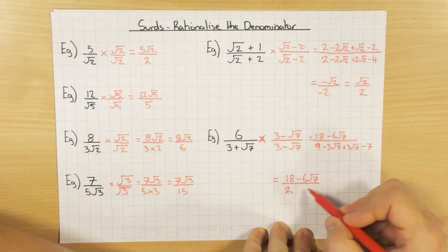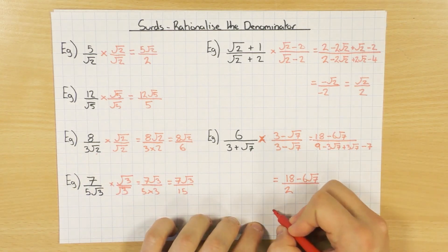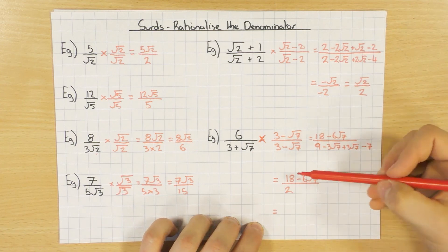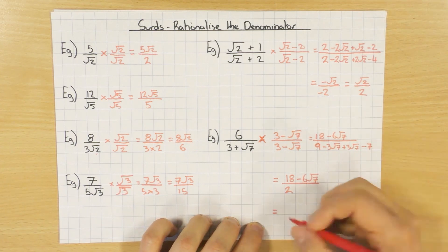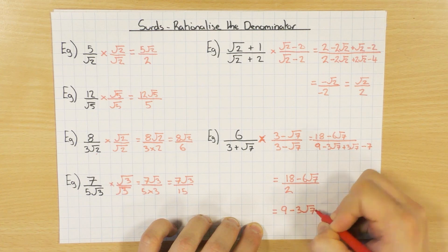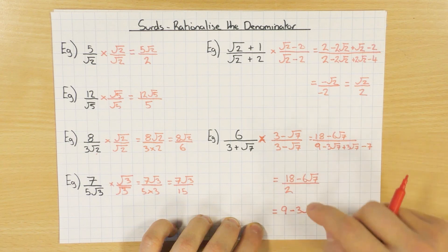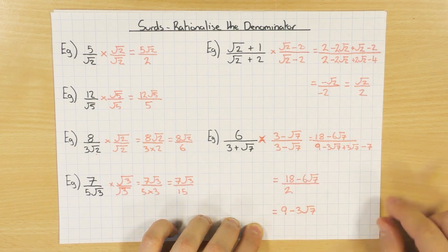But if you've got something like this, although the bottom number is now rational, it's now a whole number, we can still do one more step. Because I can do 18 divided by 2, and I can do 6 divided by 2, I can actually simplify that to be 9 minus 3 root 7. So if you can simplify it like that, by all means do so.